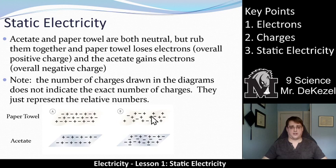So acetate and paper towel are both neutral in the description A here. We have positives and negatives in the same amounts and the same with acetate, so they're neutral. What we're going to imagine is that we rub these two things together. So rub them together and the paper towel loses electrons. So you can see over here, electrons here, here, here, down here are missing. And they have been added to the acetate sheet. So the acetate gains electrons while the paper towel loses electrons. So the paper towel becomes positively charged while the acetate becomes negatively charged.